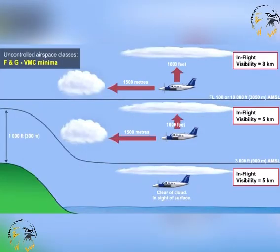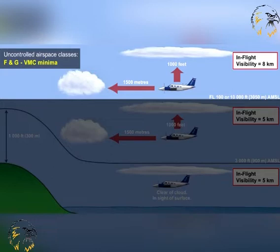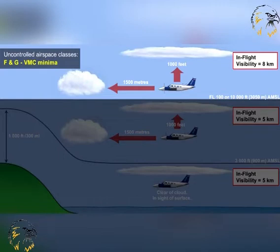Here are the VMC minima for uncontrolled airspace — that's airspace of classes F and G. Above 10,000 feet, or above flight level 100 if the transition altitude is below 10,000 feet, VMC minima in uncontrolled airspace require the pilot to have an in-flight visibility of at least 8 km, and to be able to maintain vertical separation from cloud of at least 1,000 feet, and horizontal separation from cloud of at least 1,500 meters. These VMC minima above 10,000 feet in uncontrolled airspace are the same as for controlled airspace above that level.